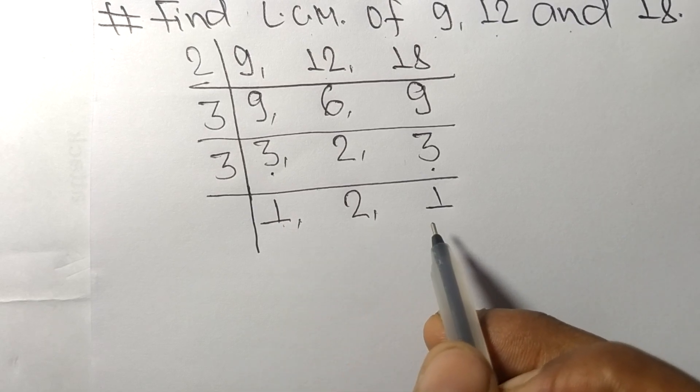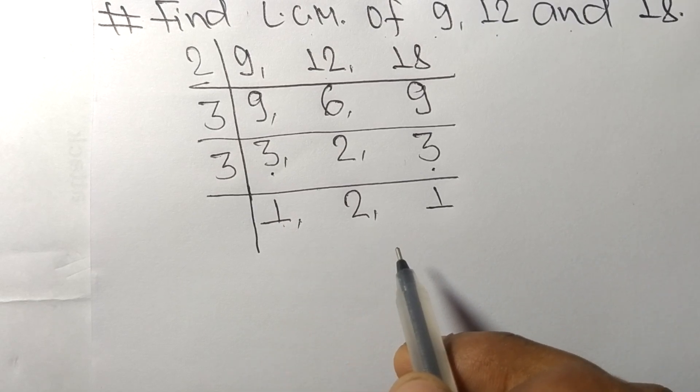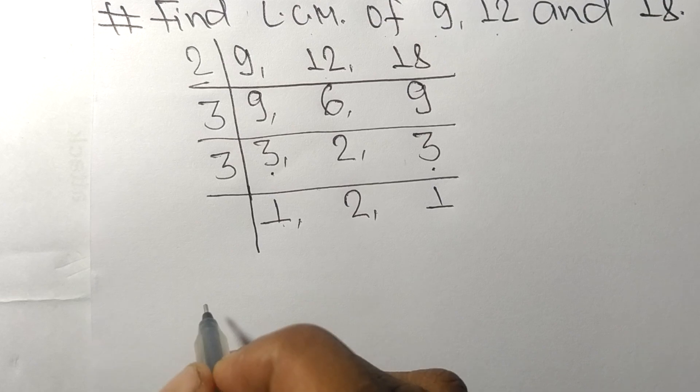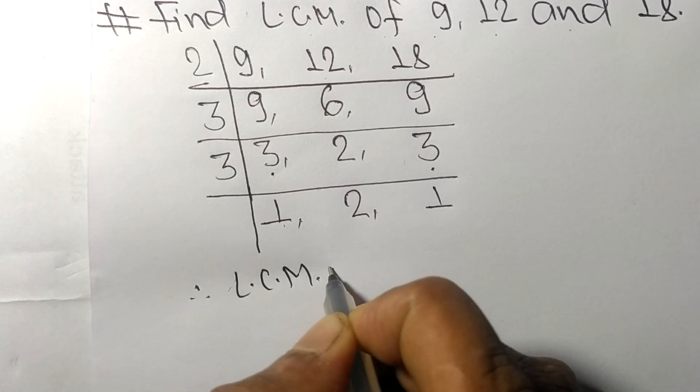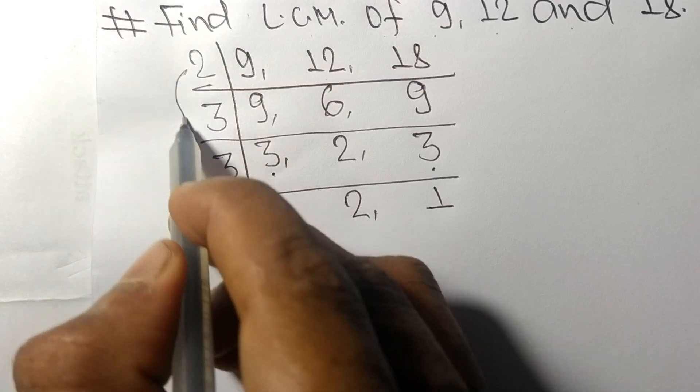1, 2 and 1 which are not exactly divisible by same number. Therefore its LCM is equal to from this side it is 2 times 3 times 3, from this side we choose the numbers greater than 1 that is 2.